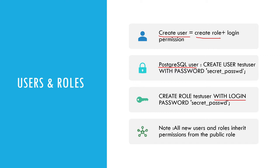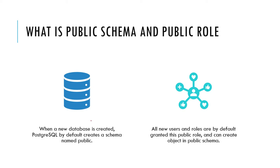In PostgreSQL, CREATE USER equals CREATE ROLE plus login permissions. By default, all new users and roles inherit permissions from the public role. Whenever you create a new database, a schema named 'public' is created by default. Any user who has access to that database will be able to select or create objects in the public schema, which is not ideal.